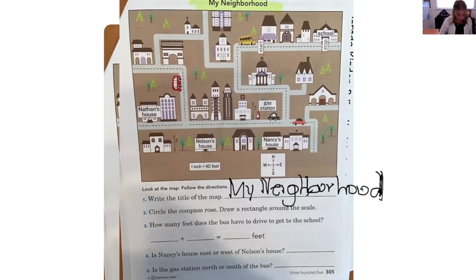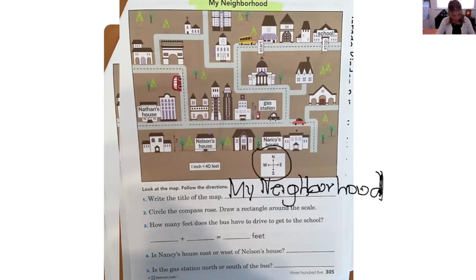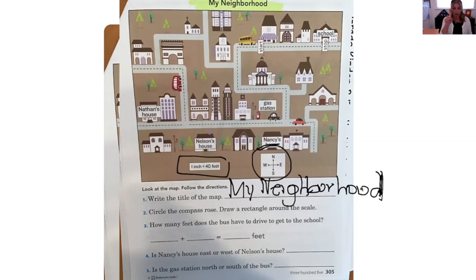Number two: circle the compass rose. Do you see the compass rose? Remember, it looks like this — never eat soggy waffles. Circle the compass rose. And then, still on number two, draw a rectangle around the scale. Do you see the scale? It's to the left of the compass rose. One inch of this map equals 40 feet. So we know what one foot is — well, one inch equals 40 feet. Now, we're all finished with number two.